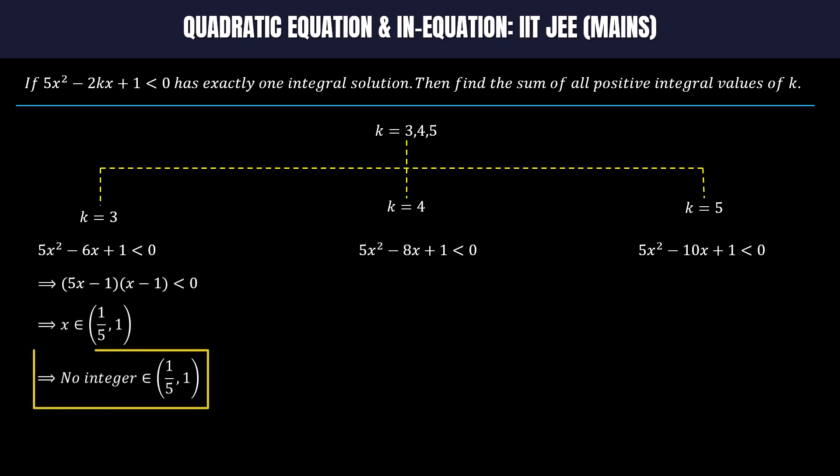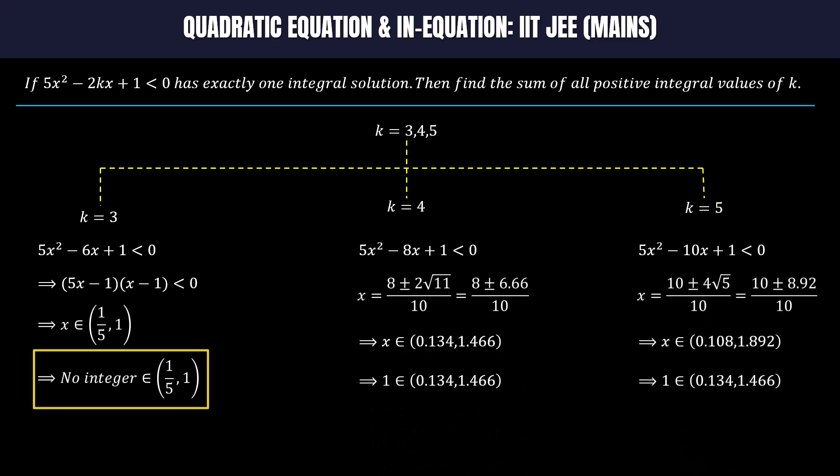After solving, we found that no integer is in the solution set of the first inequality. However, there is exactly one integer solution in the solution set of the second and third inequality. So rejecting k = 3, we are left with two valid values of k, which are 4 and 5.